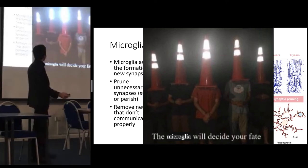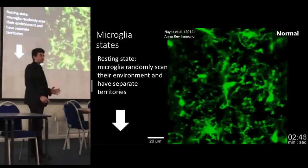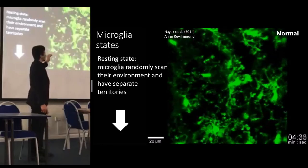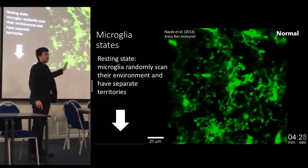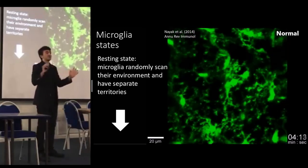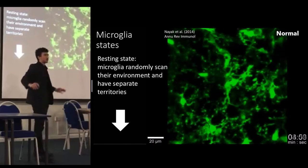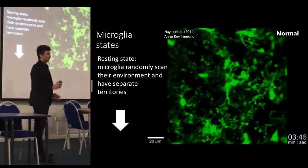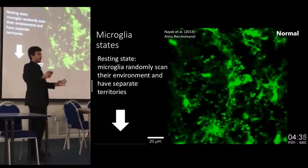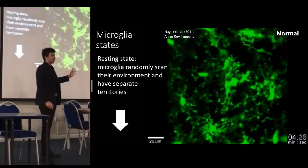What you just saw was the resting state of microglia. When in their resting state in the normal brain, they constantly extend and retract their processes to survey the environment, and they are very efficient — the whole brain is surveyed completely every three hours. They randomly scan their environment and have separate territories that don't overlap that much.